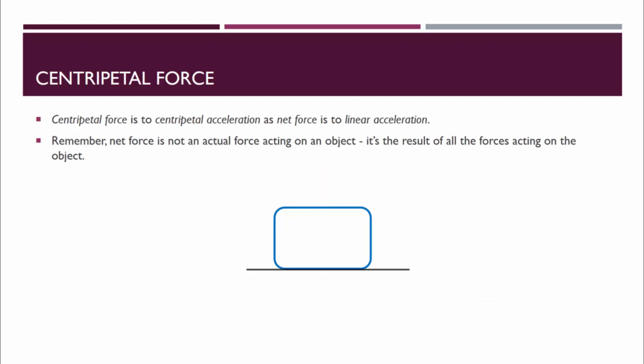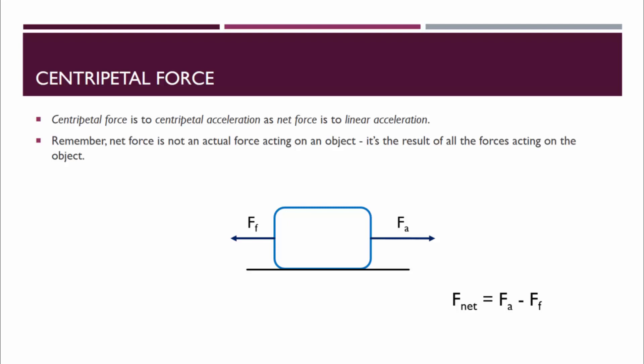Here's an object on a surface. If the surface is frictionless, or if the object is on wheels, we might only have an applied force, in which case the net force is equal to the applied force. If there is friction, it would probably be directed opposite of the applied force, so the net force would be the applied force minus the force of friction. My point here is that the net force is not one of the forces that you draw on your free body diagram.